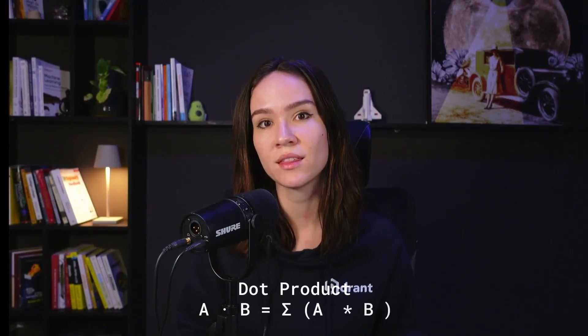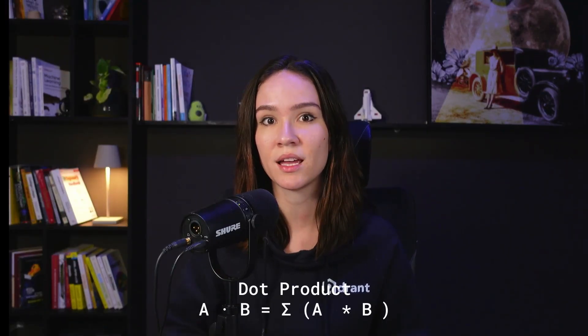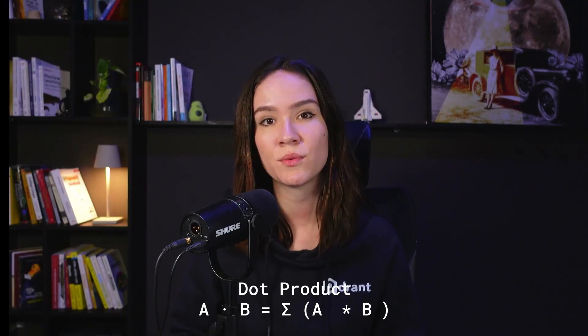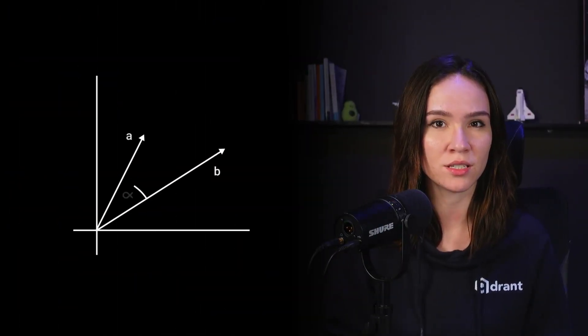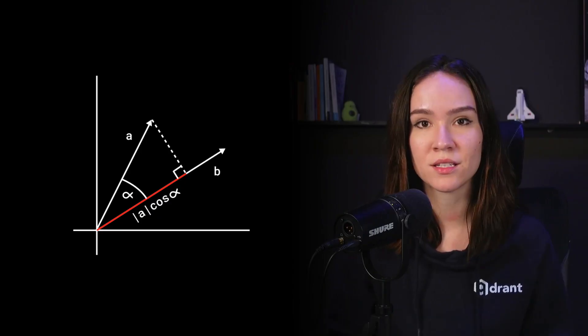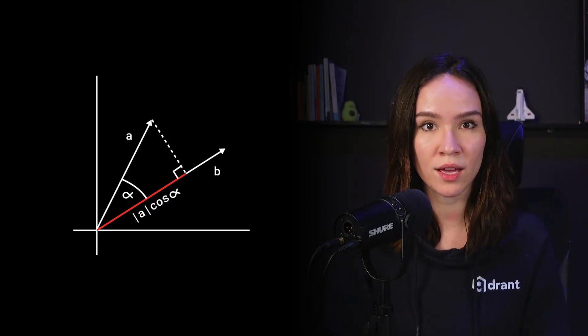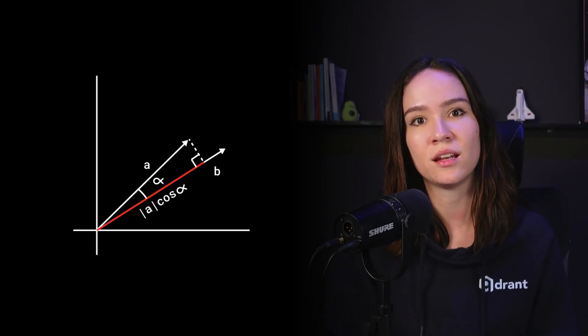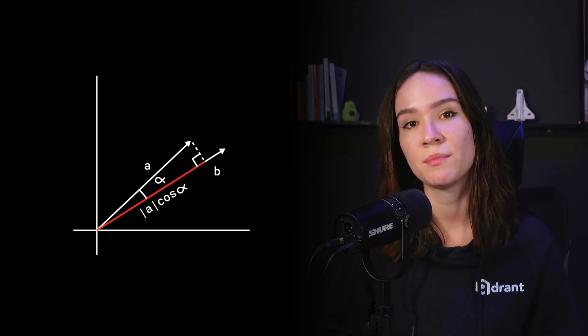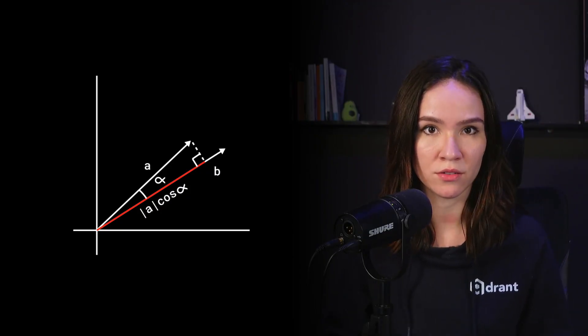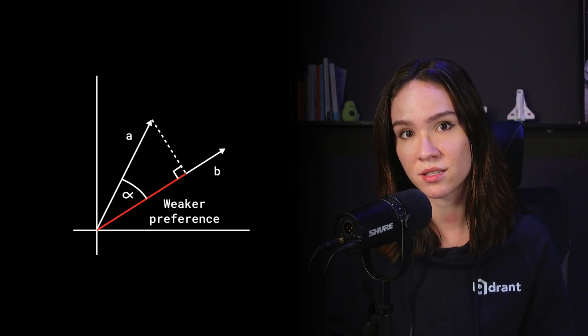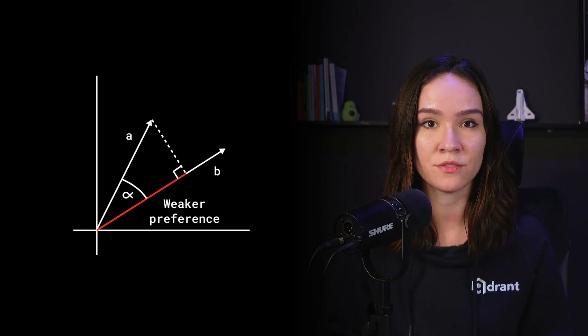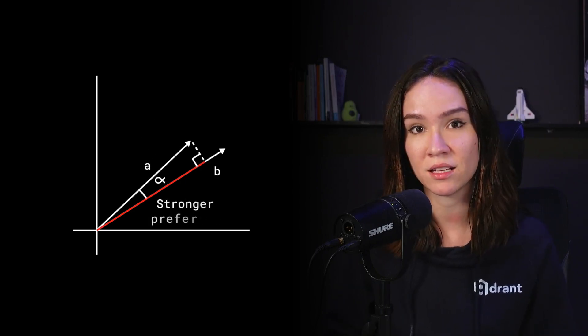The last metric is the dot product, which measures similarity with magnitude in mind. To calculate it, you multiply each dimension and sum it all up. This rewards points that are not just aligned but also large — if two vectors point in the same direction, the larger one gets the highest similarity score. That matters when magnitude is part of the signal, for example in recommendation engines where a large vector might indicate a stronger preference.